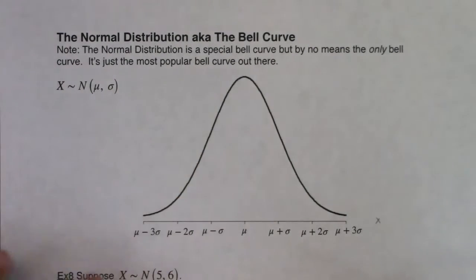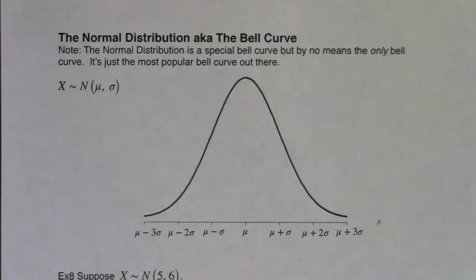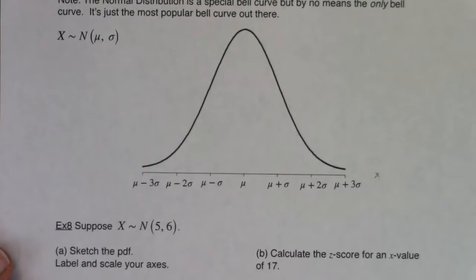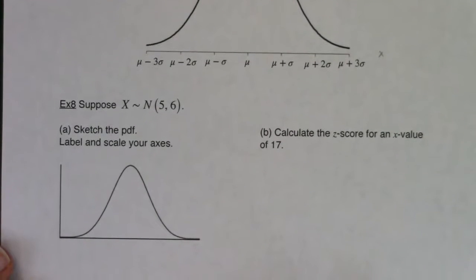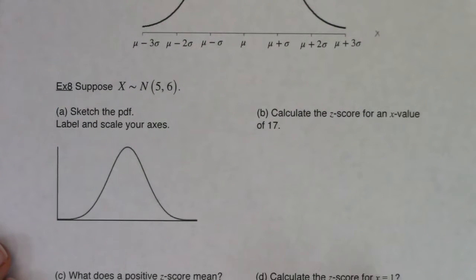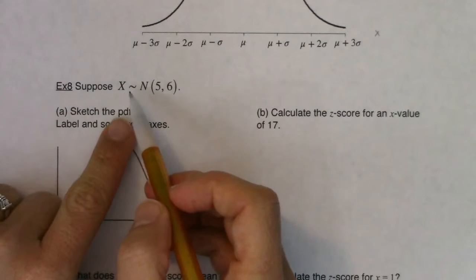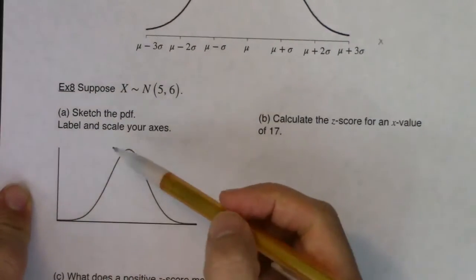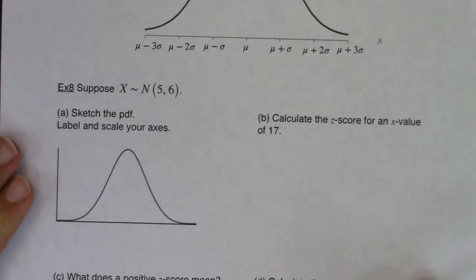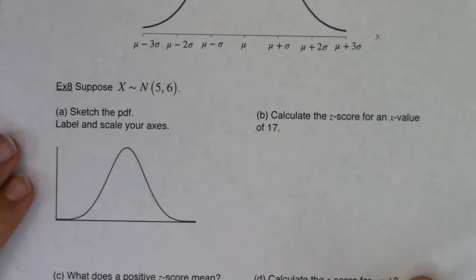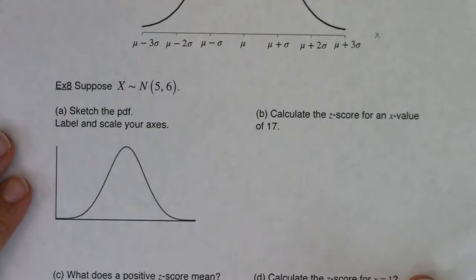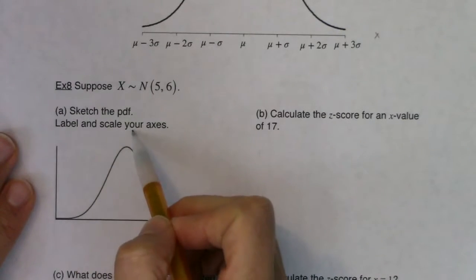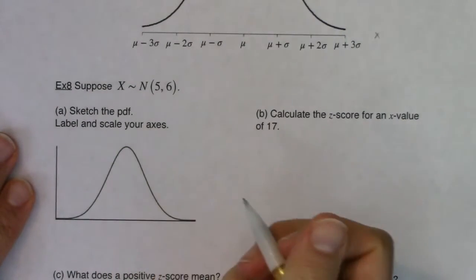So let's practice scaling up a PDF. Let me push this up so we can see this regular normal curve. We get some information here - not quite SOX, but S, C, and S. So we know the shape of this distribution is a bell curve, and I sketched one for you. We know that the center is at 5, and we know the standard deviation is 6. That's what this is saying. So when I say sketch the PDF, label and scale your axes.